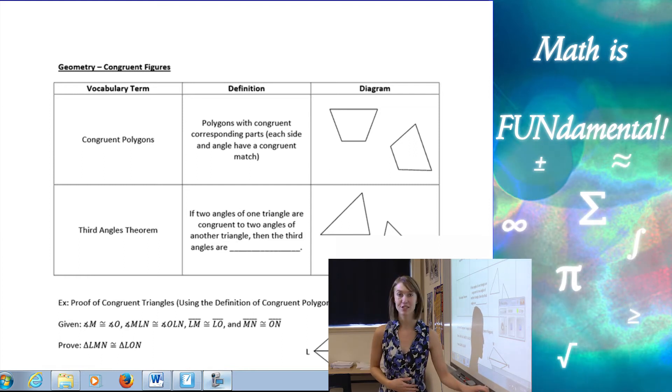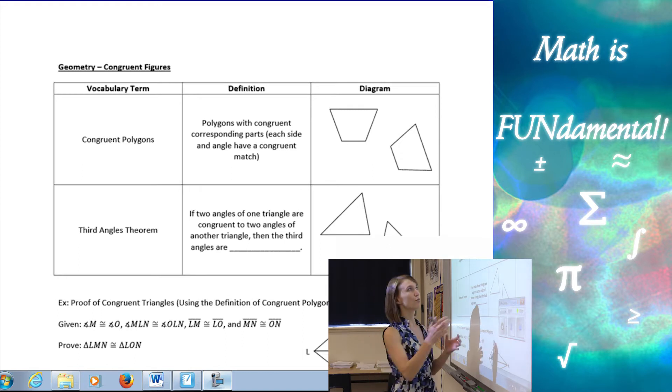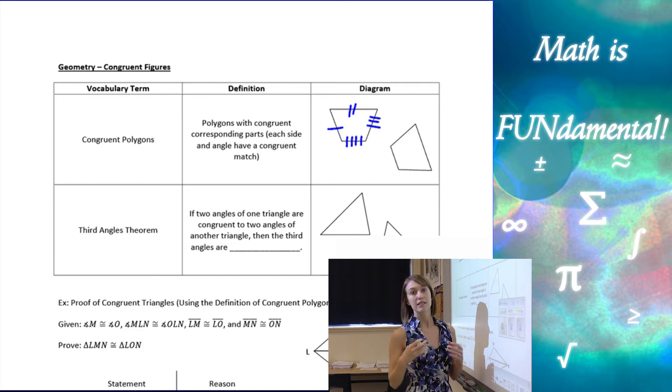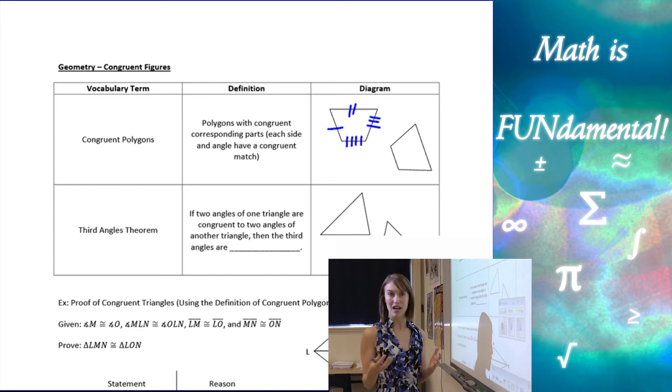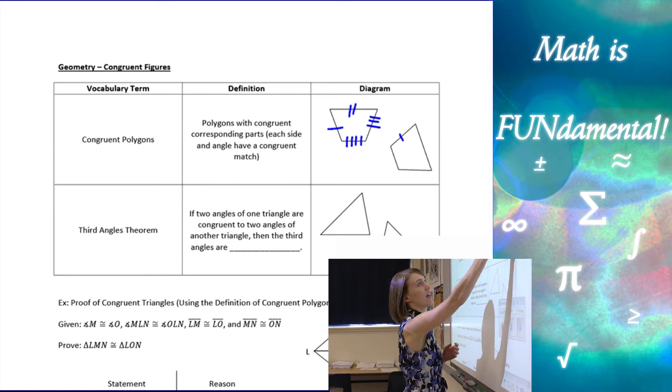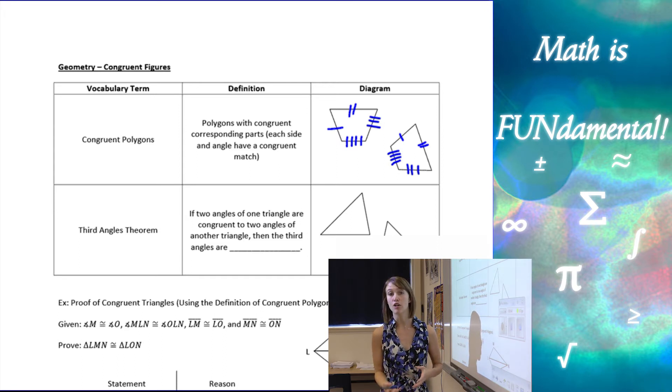We're going to start with the definition of congruent polygons, which are two polygons with congruent corresponding parts. That means they have congruent sides that match and congruent angles that match. We can show that by marking our polygons with slashes or dashed lines. If I have each side of this first polygon marked, then I need to make sure that on the other polygon there are matching dash marks showing that those corresponding sides are congruent.